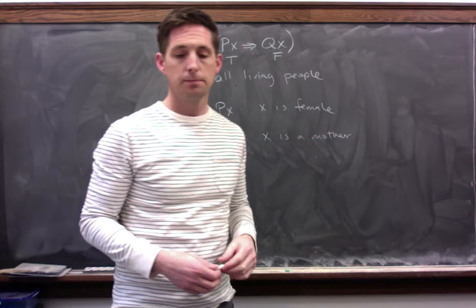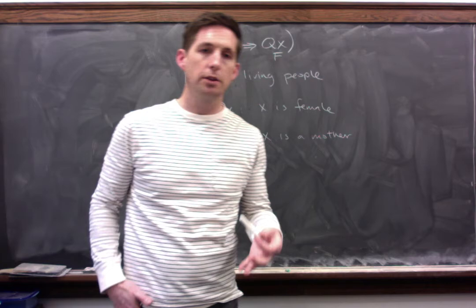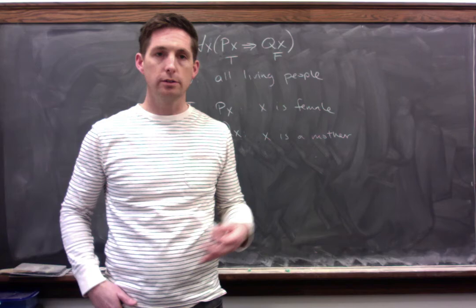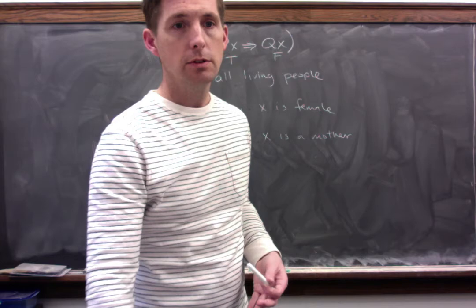That pretty much does it for this section. You'll see there are some practice problems where you can come up with universes for three different formulas — universes that make the formula true and universes that make it false. In the next video, we'll talk about how to use universes to establish validity and invalidity for certain predicate arguments, in particular predicate arguments we couldn't show validity for using Venn diagrams.